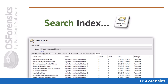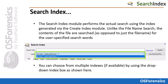Now that we've learned how to create an index, we will need to then search that index for relevant data. The search index module performs the actual search using the index generated via the create index module. Unlike the file name search, the contents of the file are searched as opposed to just the file name for the user-specified search words. You can choose from multiple indexes if available by using the drop-down index box as shown here.